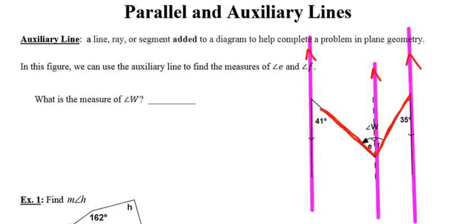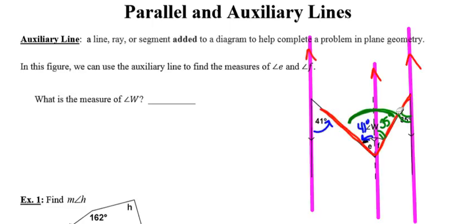The measure of angle E is going to be 41 degrees, because the two purple lines are parallel and these blue angles are alternate interior angles for those parallel lines, and therefore have to be congruent. Likewise, the angle measuring 35 degrees is alternate interior to angle F, and because those two lines are parallel, the alternate interior angles have to be congruent, making the measure of angle F equal to 35 degrees. Angle W is simply the sum of angles E and F: 41 degrees plus 35 degrees makes the measure of angle W equal to 76 degrees.